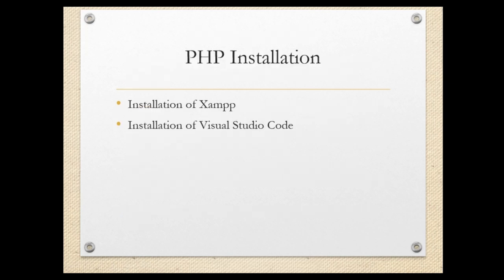Now, PHP installation. Two most important things required for PHP installation: first is installation of XAMPP, and second is installation of Visual Studio Code. By installing these two applications, you can run your PHP code on a standalone system. XAMPP is a server that we have to install, and Visual Studio Code is a text editor — or code editor — where you type the code. I will give you a separate video covering PHP installation only.